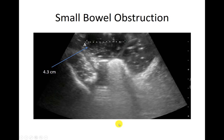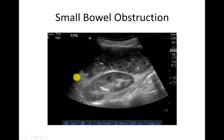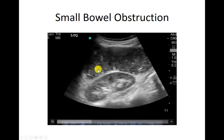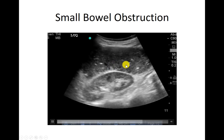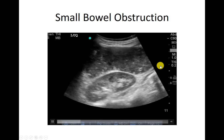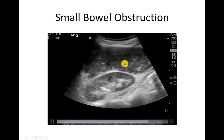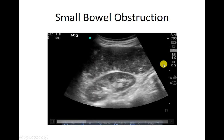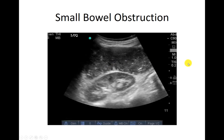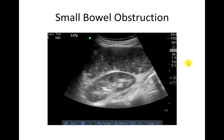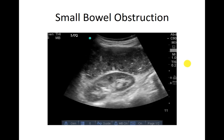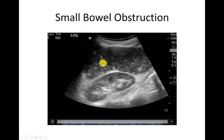Here's an example: a loop of bowel with a starry sky appearance from little flecks of air. We measure it — it's greater than 2.5 centimeters, that's too big. In another example, we watch those stars and they're not actually going anywhere. When you watch normal bowel, these little bits of gas should be moseying their way through. When you press on them they squish away and move. Here, when they're not moving — just going half a centimeter this way and back — they're not really going anywhere due to blockage.